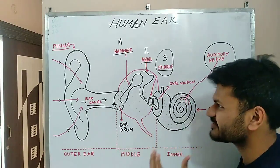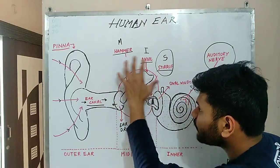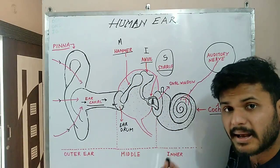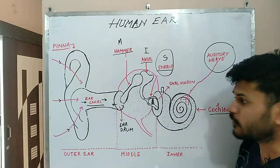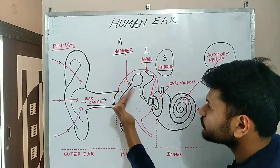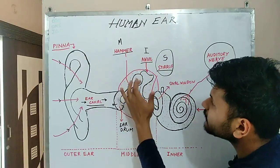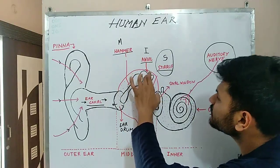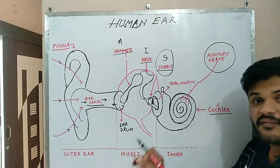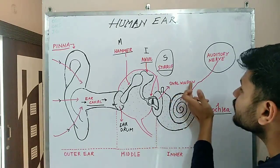The function of the middle ear is to amplify or increase the magnitude of vibration. As the eardrum vibrates back and forth, these three bones — hammer, incus, and stapes — transmit the vibrations: the hammer hits the anvil, and the anvil hits the stirrup repeatedly, transferring amplified vibrations onward.